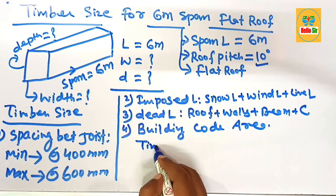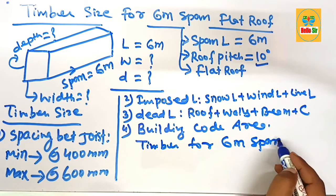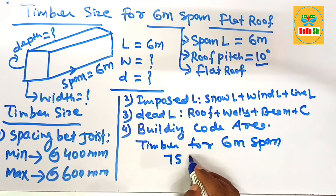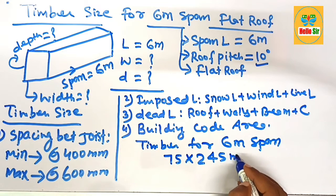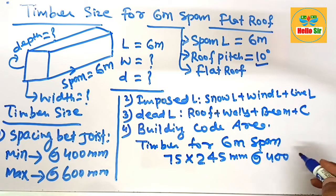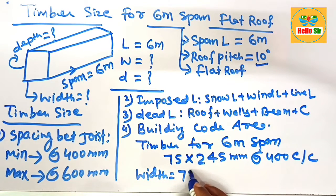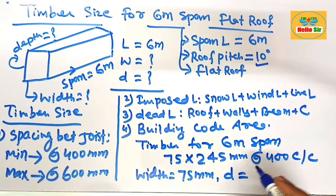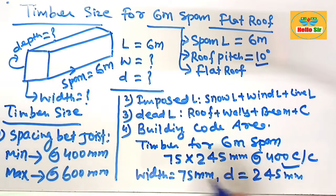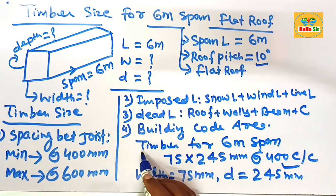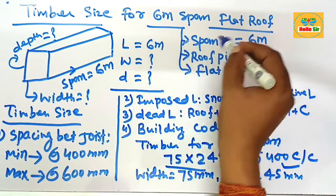Now the timber size for 6 meter of span flat roof will be 75 mm x 245 mm at 400 center spacing. In which the width of the joist, that is 75 mm and depth of the joist is 245 mm and the center of the joist spacing is about 400 mm. This one is the common timber size you need to span 6 meter of span for flat roof.